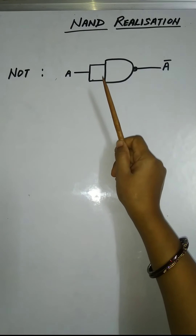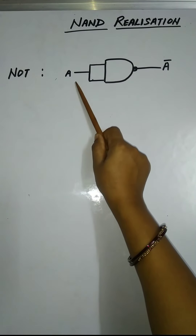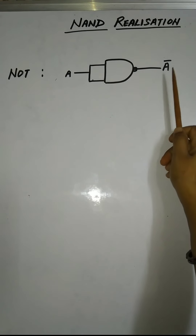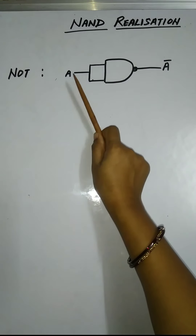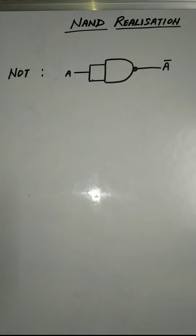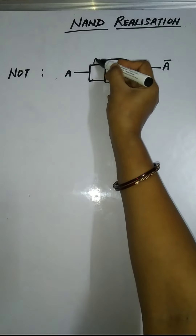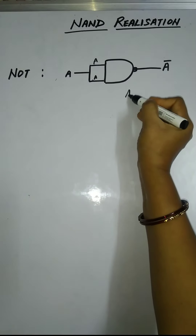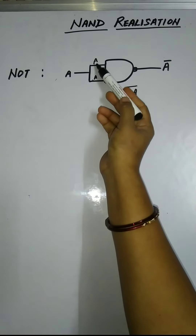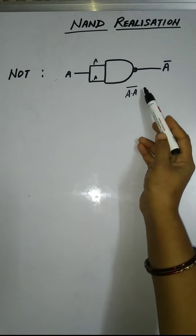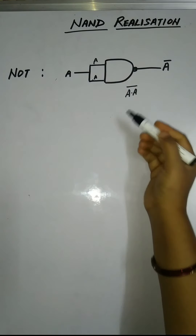For example, if you are giving A as input here, then definitely you get A bar at the output. Similarly, if you are giving B here, definitely B bar will come out as output. So here we are taking A in both inputs, and you are getting A dot A, whole bar.